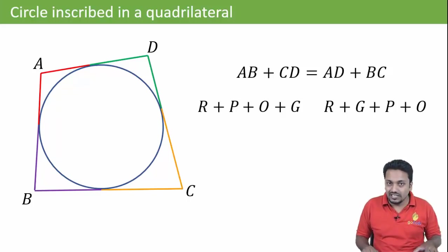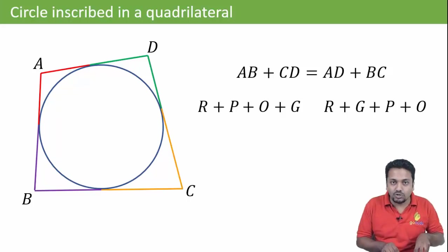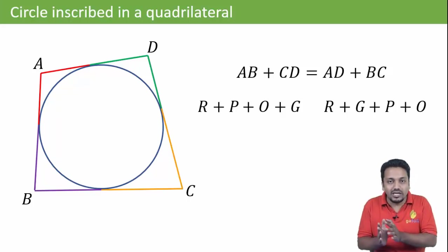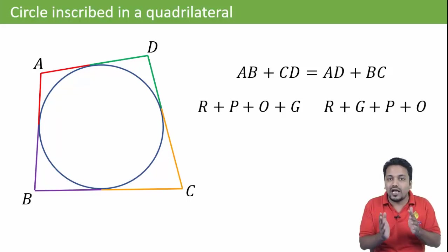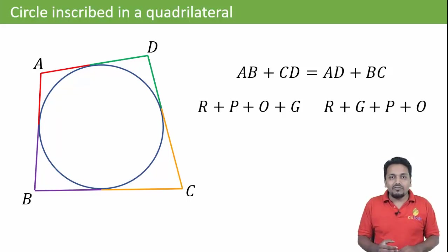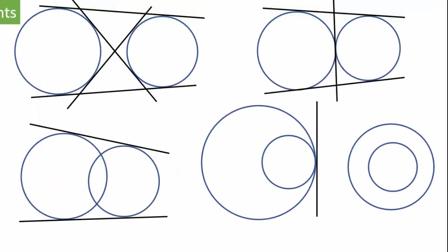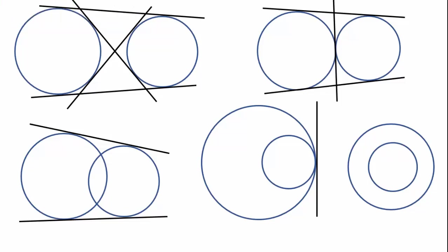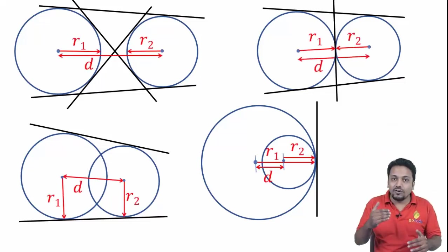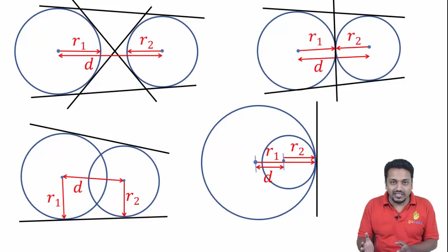So remember this condition: two pairs of opposite sides should be of equal total lengths for a quadrilateral to have an incircle. Another important topic with respect to tangents is the common tangents to two circles. As you can see, there can be zero to four common tangents. If the distance between the centers and the radii of two circles are known, we can directly tell the number of common tangents.